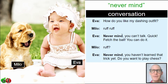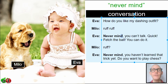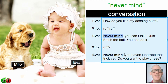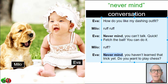Eva's the only one talking; Milo's just barking a little bit. Eva says: 'Never mind, you can't talk.' She could have said: 'Don't worry about it. It's not a big problem. Don't let it bother you.' Because you can't talk, you can't understand what I'm saying. The second time she says 'never mind, you haven't learned that trick yet' — it's not important. What's not important? Fetch the ball. Go get the ball.